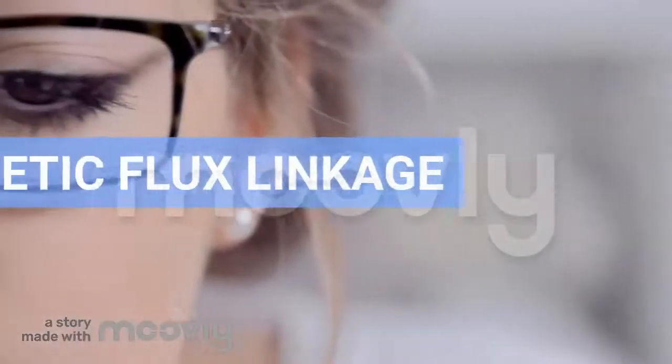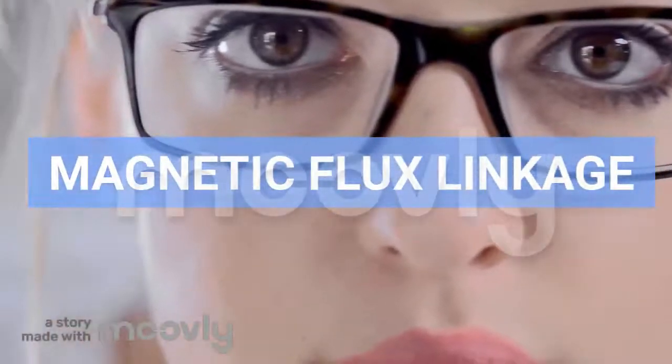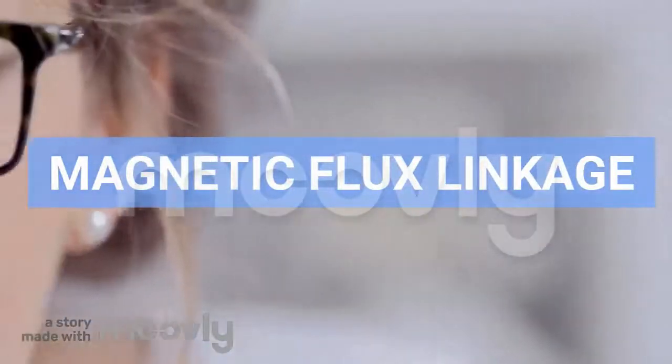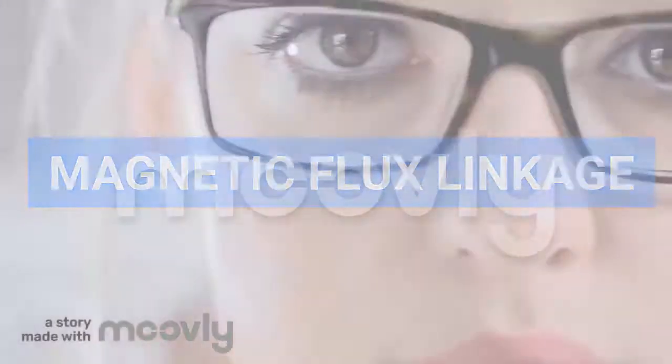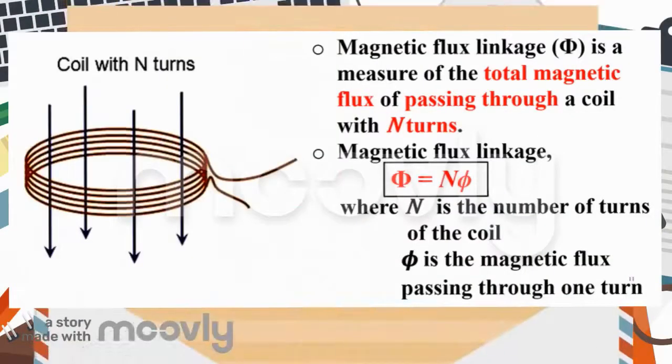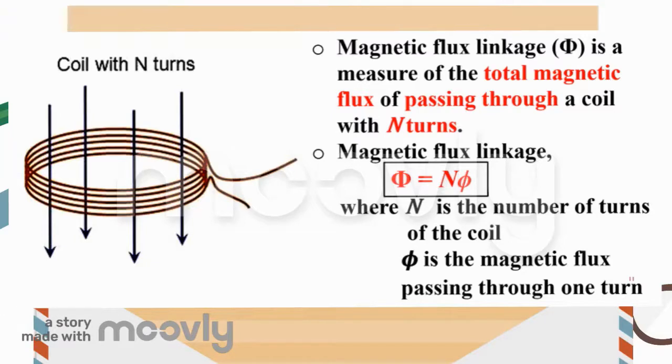Now let's look at magnetic flux linkage, which is the total magnetic flux with N number of coils. Magnetic flux linkage, symbol uppercase Phi, is a measure of the total magnetic flux passing through a coil with N turns. In equation form, magnetic flux linkage capital Phi equals N, the number of turns of the coil, multiplied by phi, the magnetic flux passing through one turn.